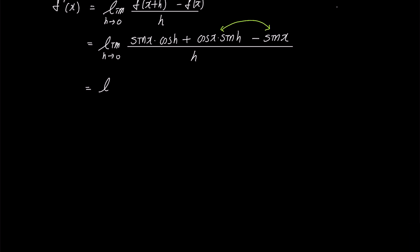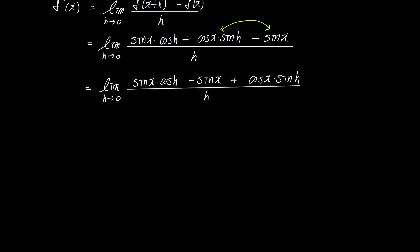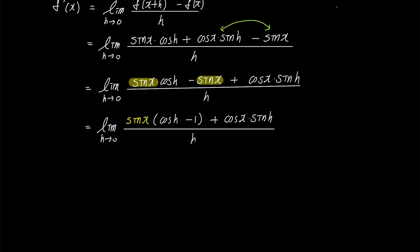Let's rearrange the terms in the numerator. The expression becomes the limit of sine x times cosine h minus sine x plus cosine x times sine h, all over h. The first two terms in the numerator have sine x as a common factor, so we can factorize it. This gives us the limit of sine x times (cosine h minus 1) plus cosine x times sine h, all over h.